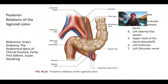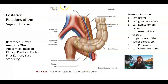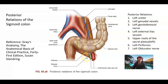The posterior relations include the left ureter, the left gonadal vessel, the left genitofemoral nerve, the left upper roots of the sacral plexus, the left obturator nerve, the left piriformis, and the left external iliac artery and vein.